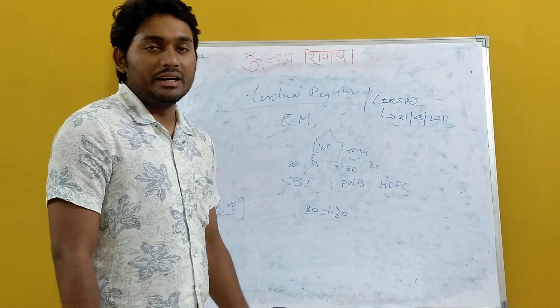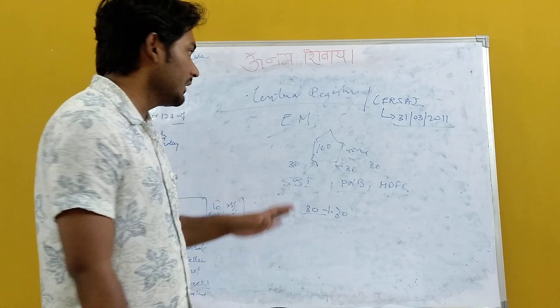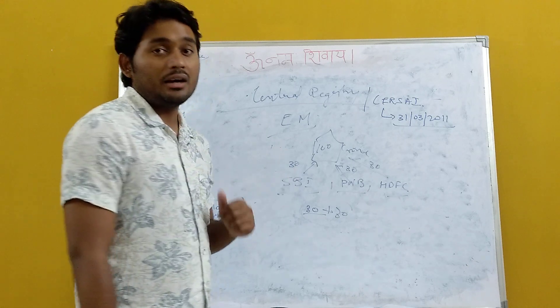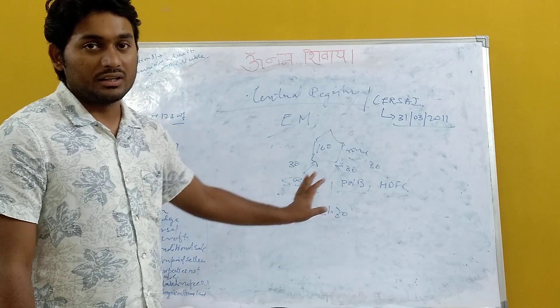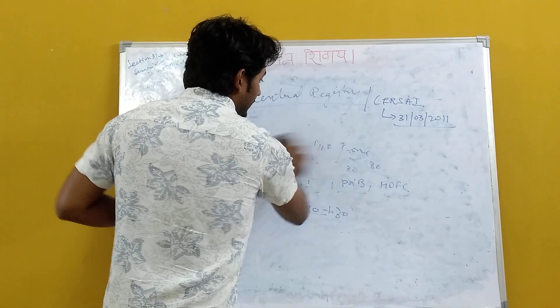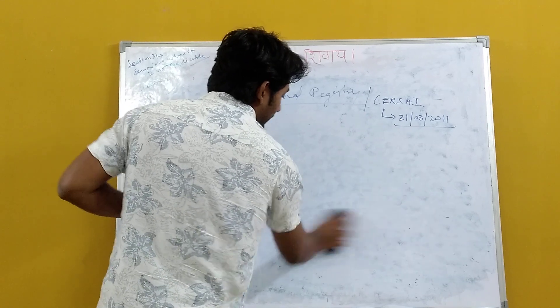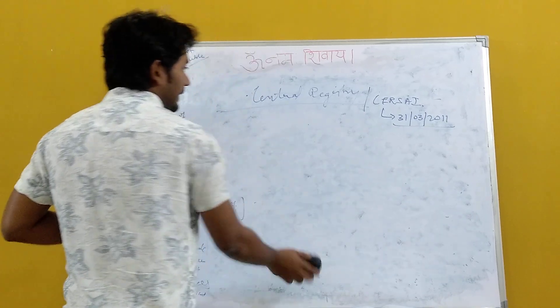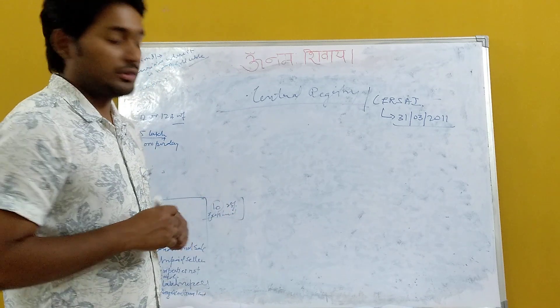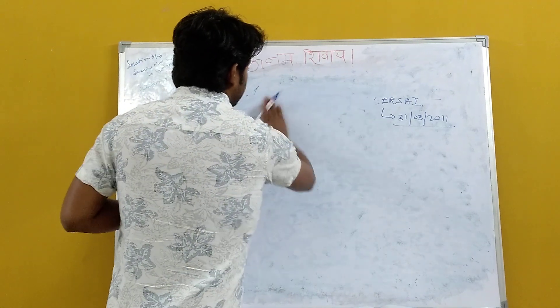In CERSAI site or through CERSAI, bank does registration. There is a 30 days time to do CERSAI registration after creation of EM. In case, if any delay happens, then another 30 days is given. A total of 60 days is there for the bank to register in CERSAI after doing EM. This is all about the Central Registry and CERSAI. Now, it is mandatory for every bank. Without CERSAI, the bank cannot charge security interest on any property.